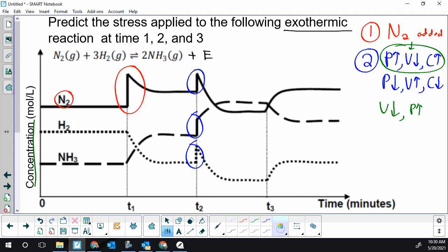One last stress to do. In our last time equals three situation we have no spikes. Everything is curving. So this is indicative of a temperature change.